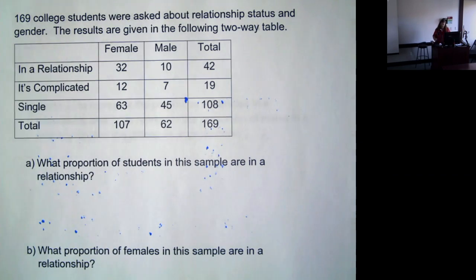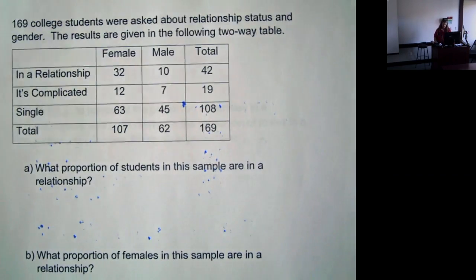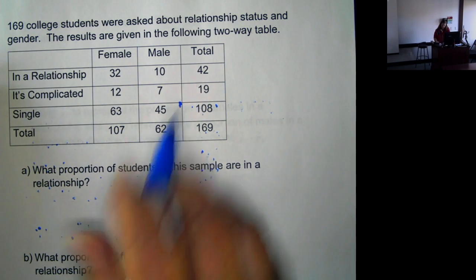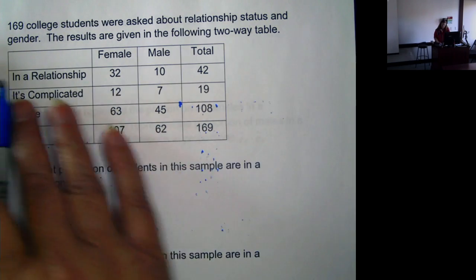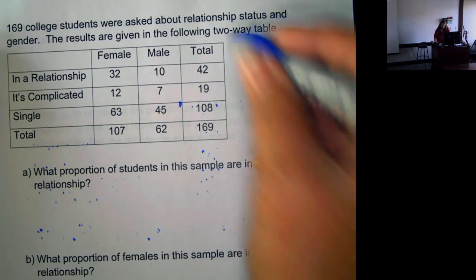Now we have a table here. This is 169 college students. They were asked about the relationship status and gender, and we have this two-way table.